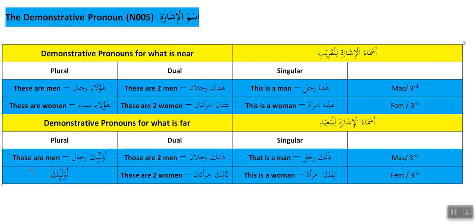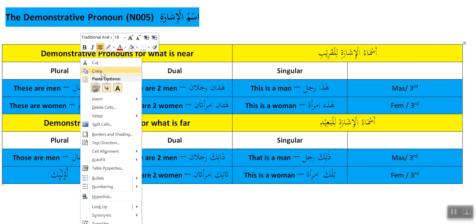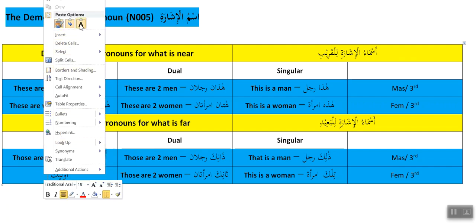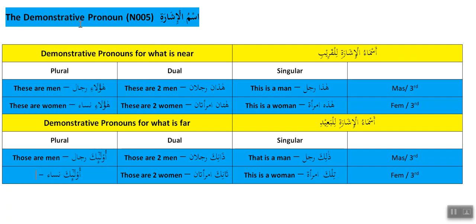Technically in English we just say 'those are women.' The plural is 'ula'ika nisa'un' — those are women. Note the 'waw' in 'ula'ika' is silent and not pronounced; we make it short.